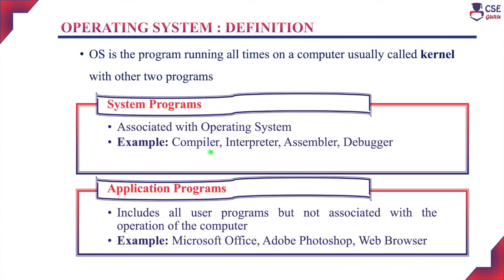Examples of system programs include compiler, interpreter, assembler, and debugger. Application programs are programs that include all the user programs to satisfy specific user needs. Whenever required, the user can install them according to their needs, and these application programs run only with the support of the system program. Examples of application programs include Microsoft Office, Photoshop, web browser, etc.